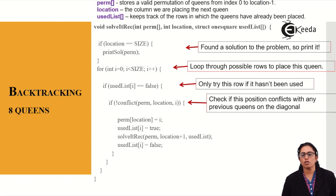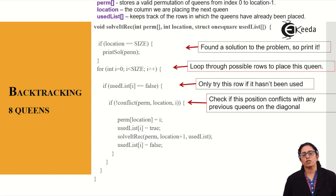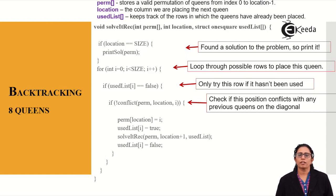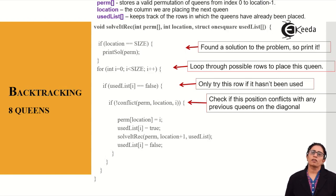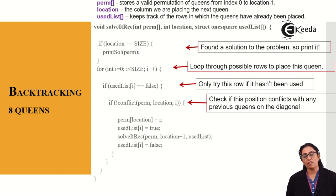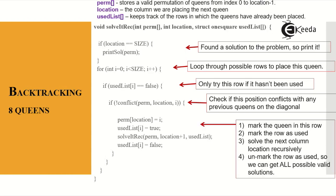We check if this position conflicts with any previous queen diagonally. If that row is not being used (status false), we enter; otherwise we backtrack to the function and try again. If there is no conflict, I place the queen, mark that row as used, then solve the next column location recursively, and finally unmark the row as used so we can get all possible valid solutions.